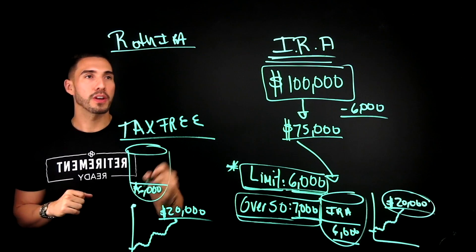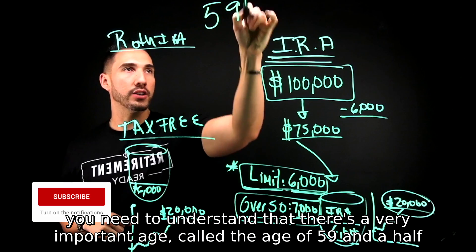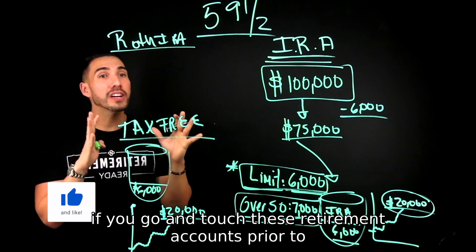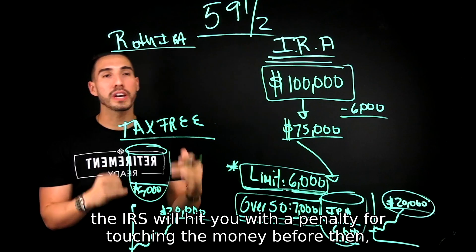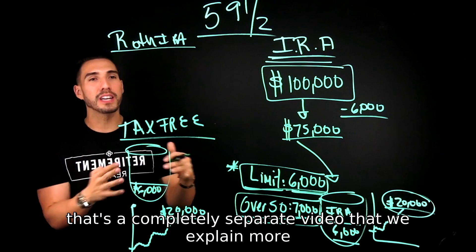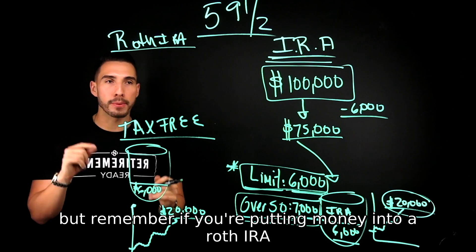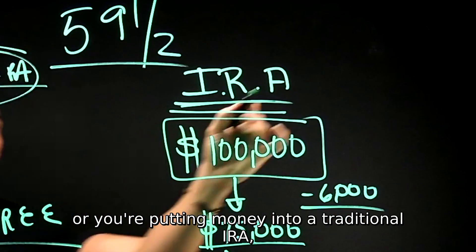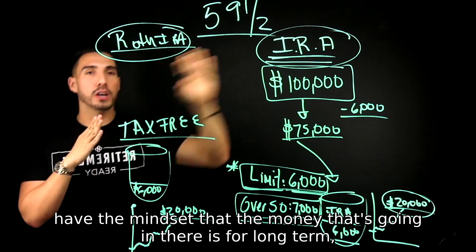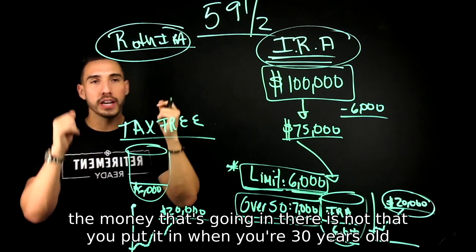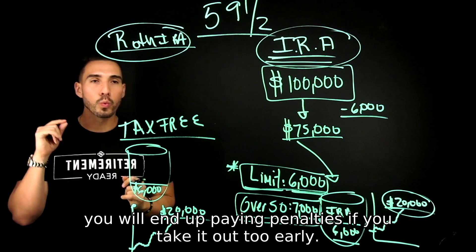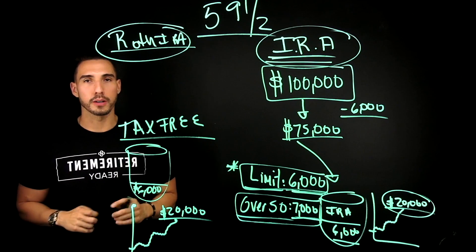One final point: you need to understand the very important age of 59 and a half. If you touch these retirement accounts prior to age 59 and a half, the IRS will hit you with a penalty. That's a separate topic we cover more in depth elsewhere. But remember — whether you're putting money into a Roth IRA or a traditional IRA, have the mindset that this money is for the long term. Don't put money in at 30 thinking you'll take it out at 34, because you will end up paying penalties if you take it out too early.